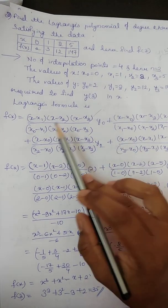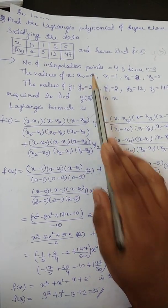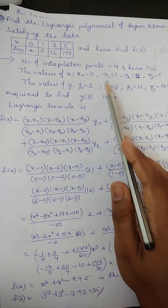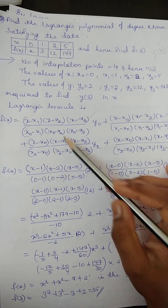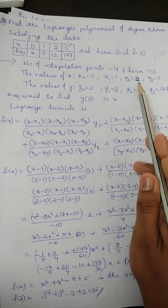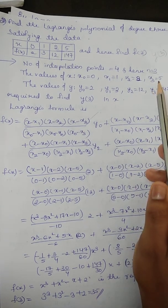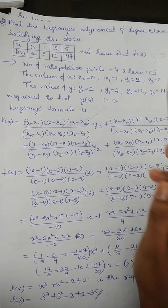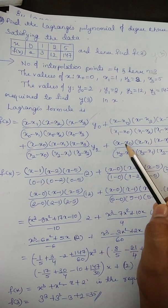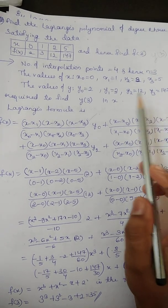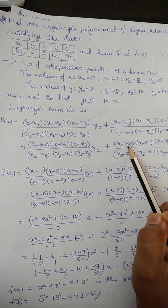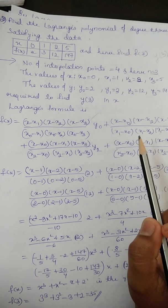Whole divided by, now x0, x0 value is what? 0. 0 minus x1 value is 1. Into x0, 0 minus x2 will be 2. Then, 0 minus x3 value will be 5. Plus, x minus x0. So, again, x is as it is, minus x0 is 0.